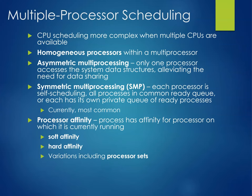Multiprocessor scheduling is more complex because multiple CPUs or cores are involved. Ideally, homogeneous processors are used. Asymmetric multiprocessing has only one processor accessing the system data structures, alleviating the need for data sharing. Symmetric multiprocessing (SMP) has each processor self-scheduled, with all processes in a common ready queue or each with its own private queue — SMP is the most common. Processor affinity means a process has affinity for the processor it's currently running on; there's soft affinity and hard affinity, with variations including processor sets.